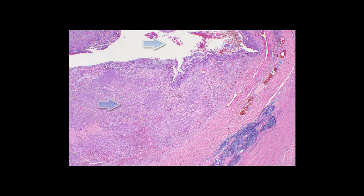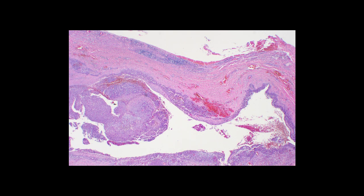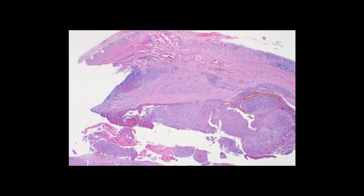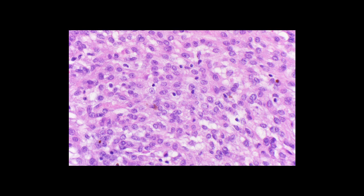Here is another example. Again from low power you can see all three features: the blood-filled space, the sheets of histiocytic tumor cells, and the peripheral lymphocytic cuff and fibrous pseudocapsule. Around the periphery there is a somewhat incomplete lymphocytic cuff in this case, which is a little bit larger than the other example. At high power, again, you can see these oval-round histiocytoid cells that are rather innocuous-appearing, although these are a little bit more plump than the previous examples.